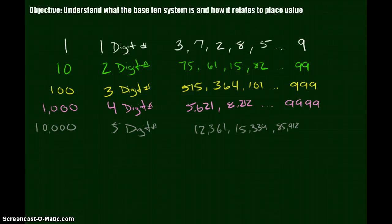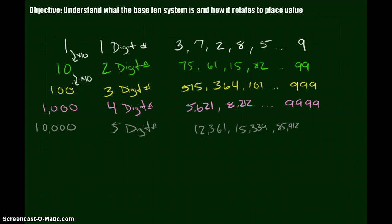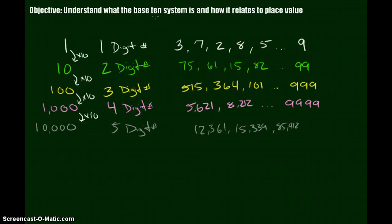So the pattern here: to get from a one-digit number to a two-digit number, how many ones do you need to get 10? You need 10 of them — times 10. How many 10s do you need to get to 100? 10 times 10 gives you 100 — so times 10. How many 100s do you need to get 1,000? You need 10 hundreds — times 10. How many thousands do you need to get 10,000? Ten of them — times 10. The base 10 system says to get from one digit to the next, you multiply by 10. Each time you go up a new digit, it's 10 times bigger.